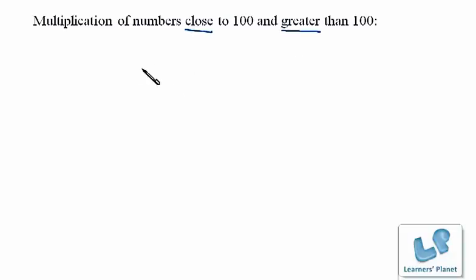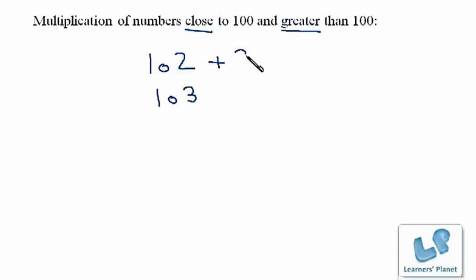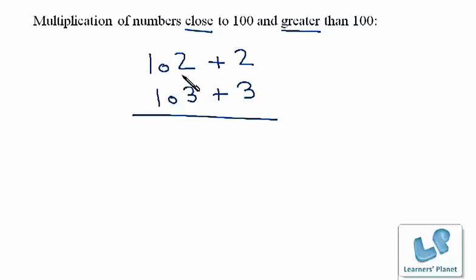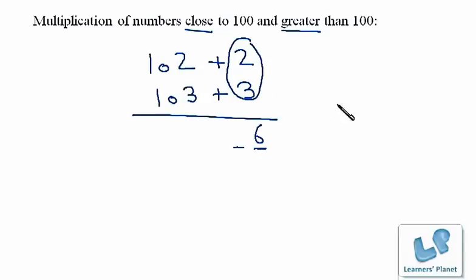We'll take the example of multiplying 102 with 103. Now we have to write how far these numbers are from 100, so this is plus 2 and this is plus 3. You can write either 103 on the top or 102 — it doesn't matter, it's the same thing. Now we will multiply these two numbers: 3 into 2 is 6, but we need to fill two digits here because 100 has two zeros.